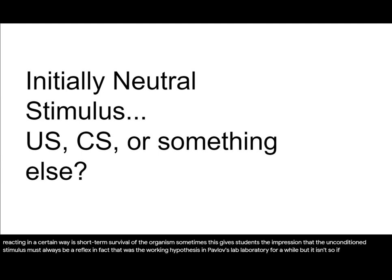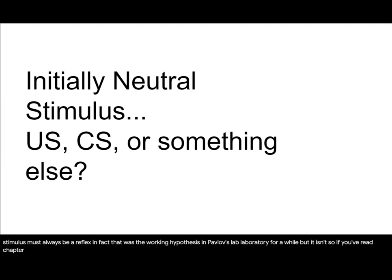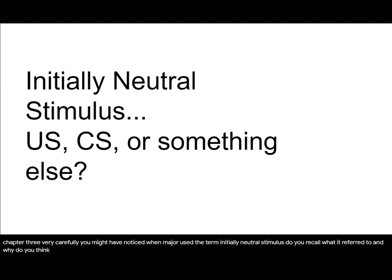If you've read Chapter 3 very carefully, you might have noticed when Maser used the term 'initially neutral stimulus.' Do you recall what it referred to? And why do you think behavioral scientists might prefer that term?